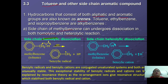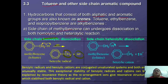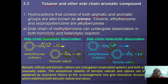In homolytic dissociation, one of the H atoms in the CH3 group undergoes homolytic cleavage to form a benzylic radical and a hydrogen radical. At the same time, methylbenzene can also undergo heterolytic dissociation, where the CH2 group dissociates to form H minus, leaving a benzylic cation.